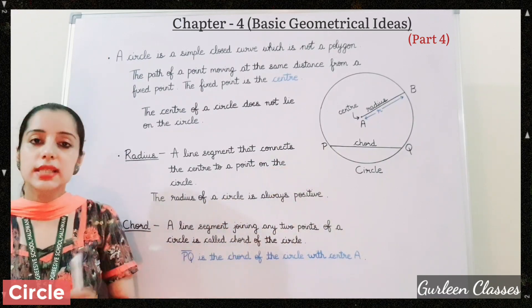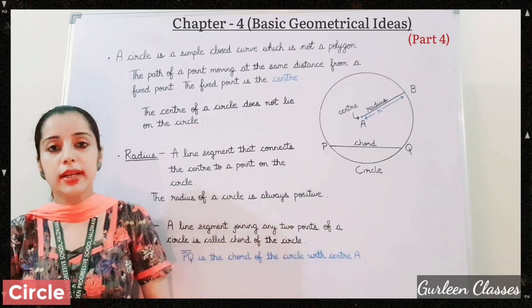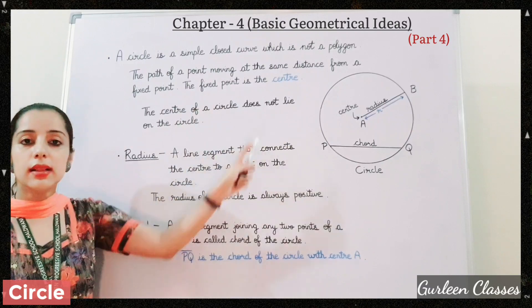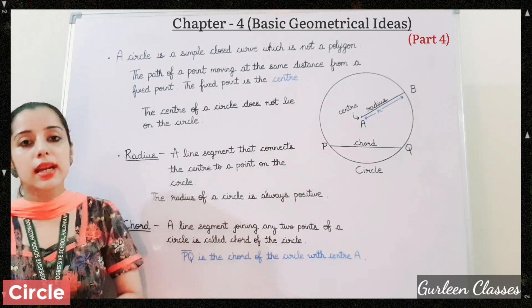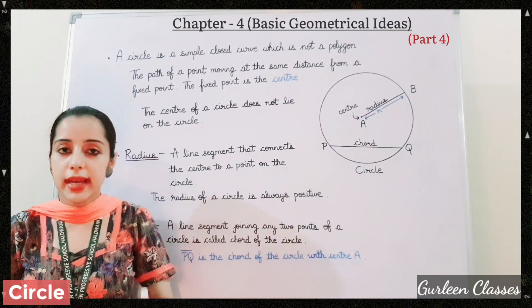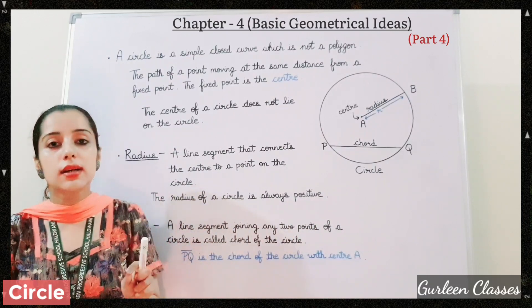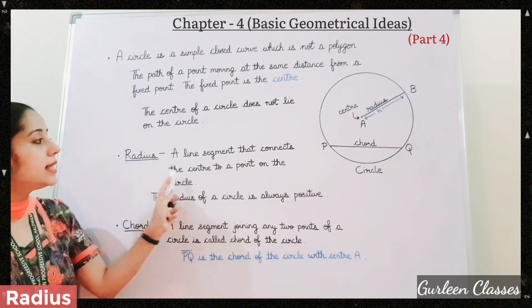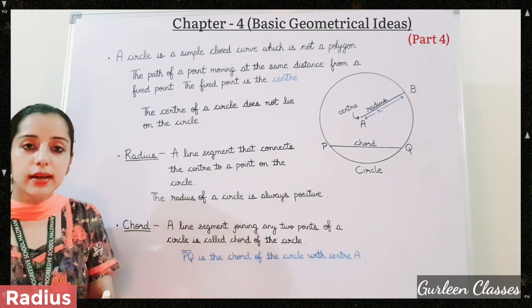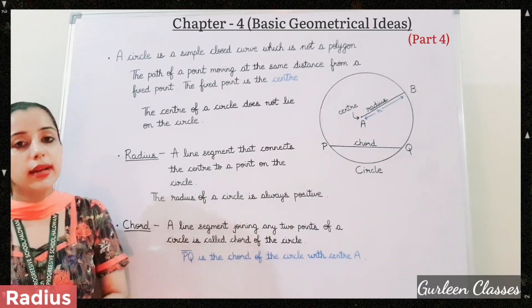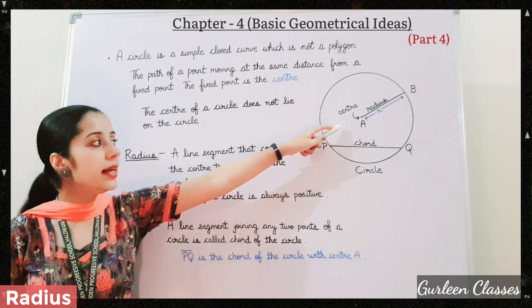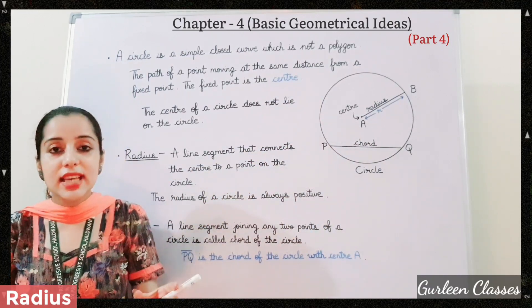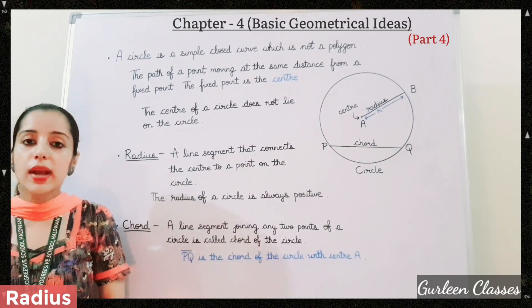The fixed point is the center of the circle. Here I have drawn one circle. Point A is the fixed point — it is called the center of the circle. The center of the circle does not lie on the circle; point A will not lie on the boundary. Next, we have radius. A line segment that connects the center to a point on the circle is called radius. Here, center point A is connected by a line to point B — that line segment is known as radius.